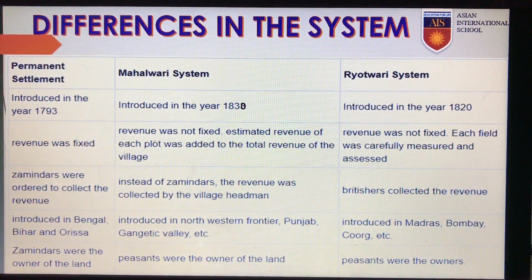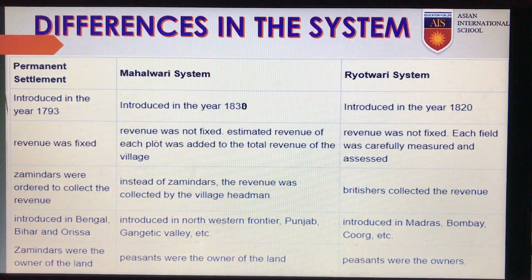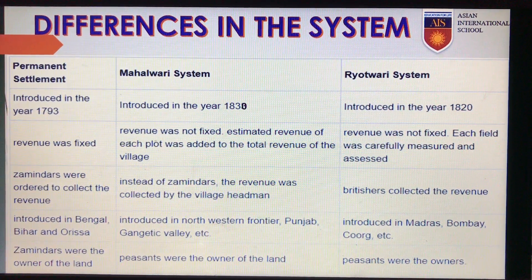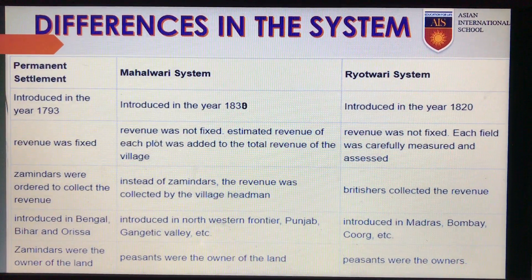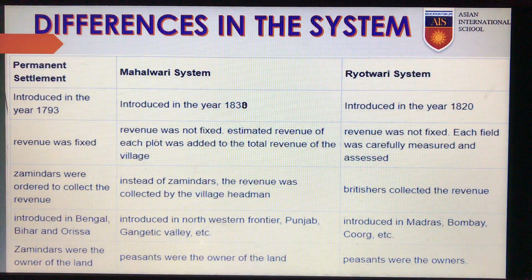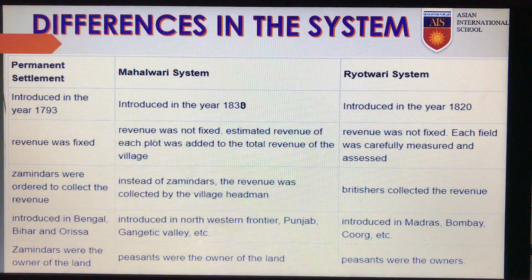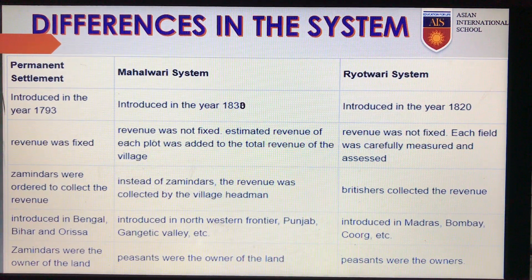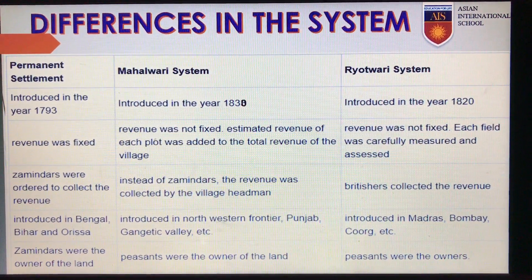In terms of areas, the Permanent Settlement was introduced in the eastern region of India, while the Mahalwari system was introduced in the northwestern part of India, and the Ryotwari system was introduced in Madras and later the Bombay Presidency. Regarding land ownership, in the Permanent Settlement the zamindars were given ownership of the land, while in the Mahalwari or Ryotwari system the peasants were the owners of the land.